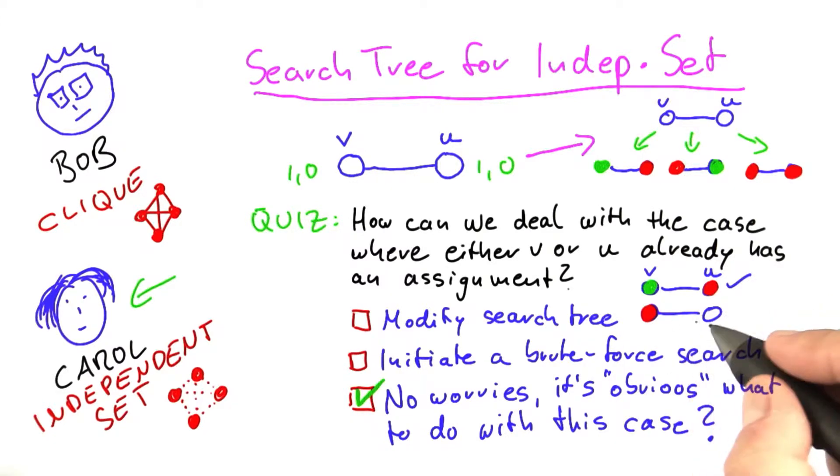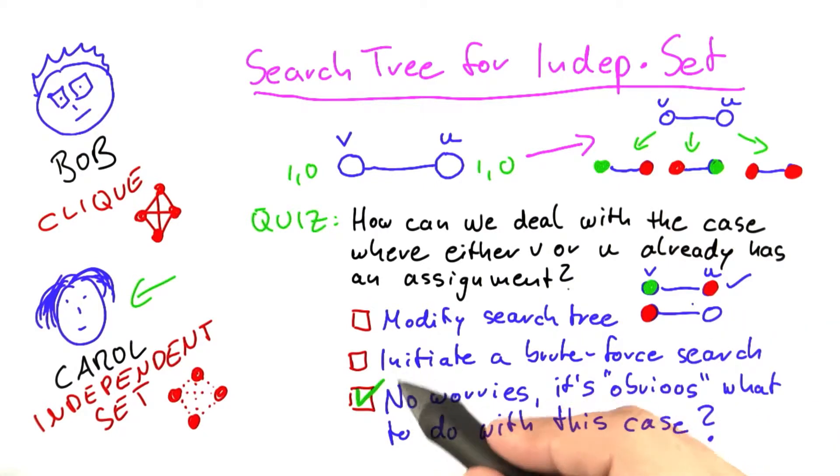Now what about the case down here? That's the case that requires a little more thought. By itself, right now, it could either be that U is in the independent set or it's not, and we don't know. So you might have been inclined to think that we need to modify the search tree or initiate some other form of brute force search. But actually, that's not necessary. Now I'll show you why.